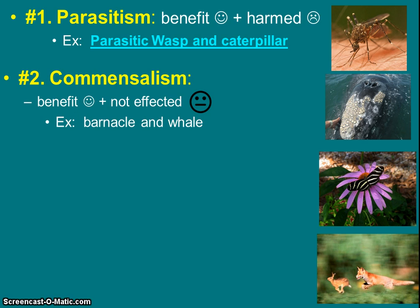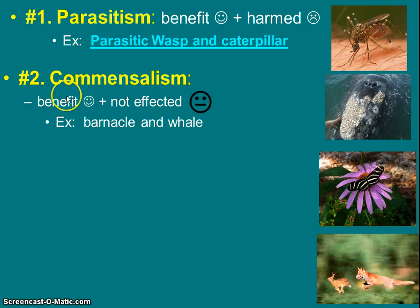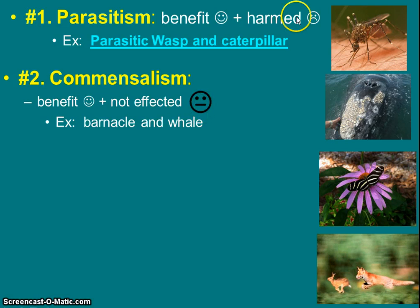The second type is commensalism. Instead of harm like in parasitism, one thing is going to benefit, but now the other creature is unaffected. A great example is barnacles — those white things living on a whale. The whale barely notices these creatures growing on it, but the barnacles love it. As the whale swims through the water, the barnacles are getting food. The barnacles are benefiting; the whale doesn't care. That's commensalism.